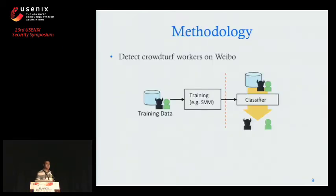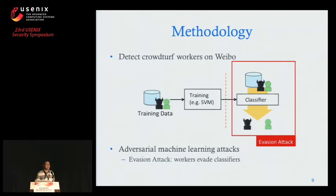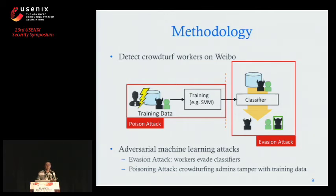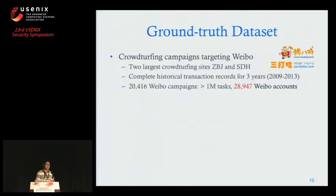The first step is to build a machine learning classifier to classify worker accounts that perform those tasks. The second step is to look at different adversarial machine learning attacks against different components in this process. The first attack is evasion, which happens during the detection phase — workers try to evade the classifier. Another attack is poisoning, which happens during training — crowd-turfing administrators tamper with the training data to mislead model training. For detection, we need data.